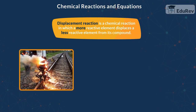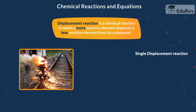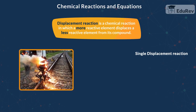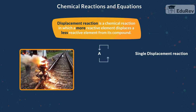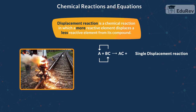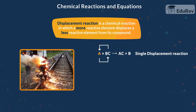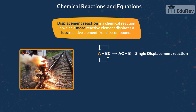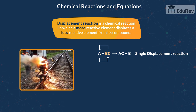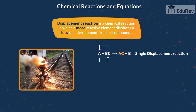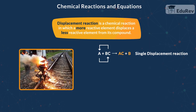Let's first understand a single displacement reaction. Here A reacts with BC giving AC and B. In this case, A seems to be quite strong and seems to be pushing out, or rather displacing, B from BC, thereby forming a new compound AC and setting B free.